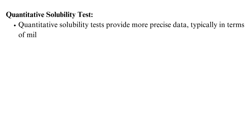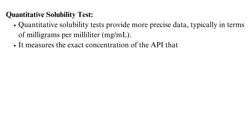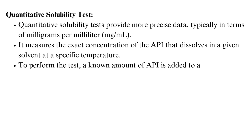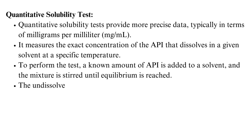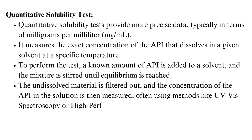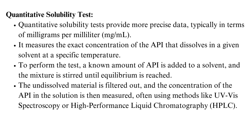Quantitative solubility tests provide more precise data, typically in terms of milligrams per milliliter. It measures the exact concentration of the API that dissolves in a given solvent at a specific temperature. A known amount of API is added to a solvent, and the mixture is stirred until equilibrium is reached. The undissolved material is filtered out, and the concentration of the API in the solution is then measured, often using methods like UV-Vis spectroscopy or high-performance liquid chromatography (HPLC).